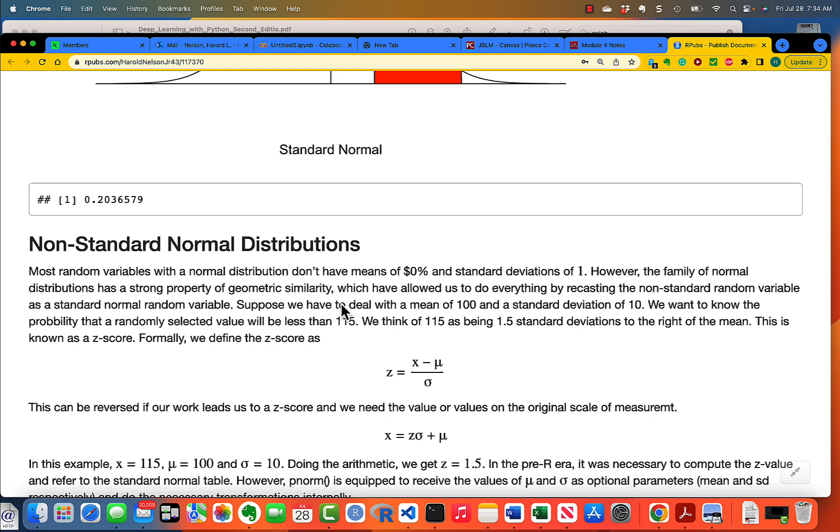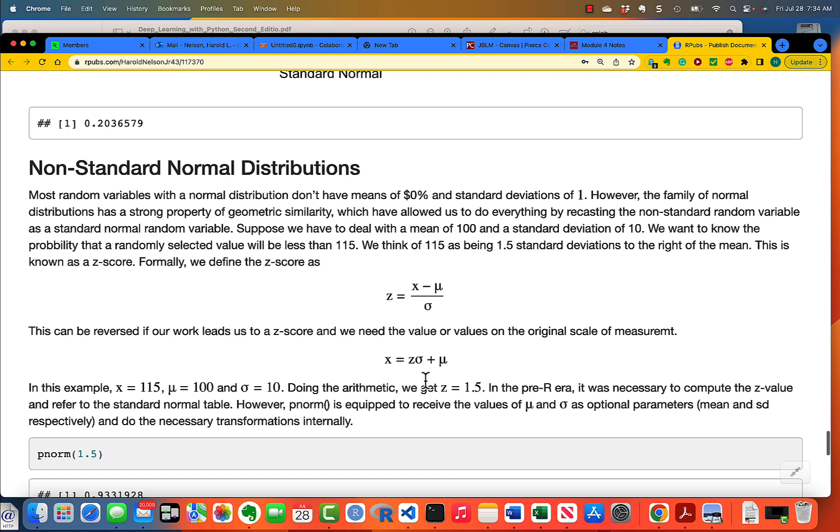Now, it would be extremely unusual in the real world to be dealing with a standard normal distribution. Normally, you're dealing with a distribution which has a very different mean from 0 and a very different standard deviation from 1. In the old days, we only had the one standard distribution table, and we had to calculate a z-score by subtracting the mean from the value of x and then dividing by sigma.